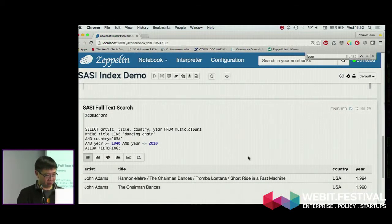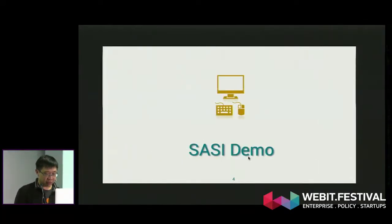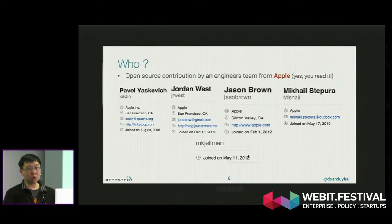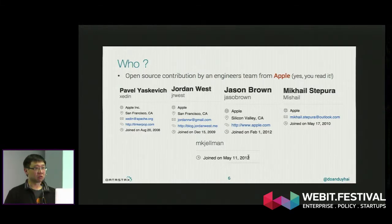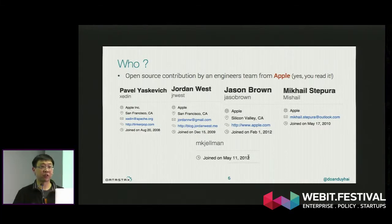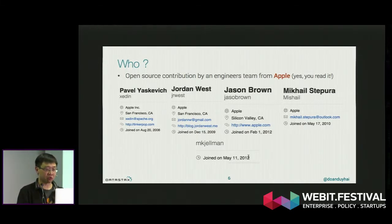So how is it working in Cassandra? Let's see some internal details. Who created this? It is a contribution from the engineering team at Apple. One day they developed this full-text search index for their own internal usage, put it into production for one year, and then contributed it back to the community as the open-source version.